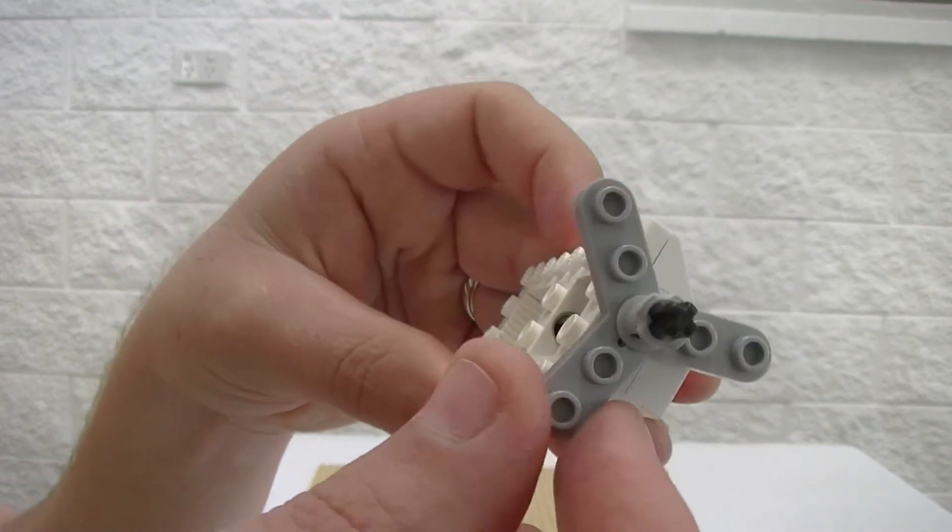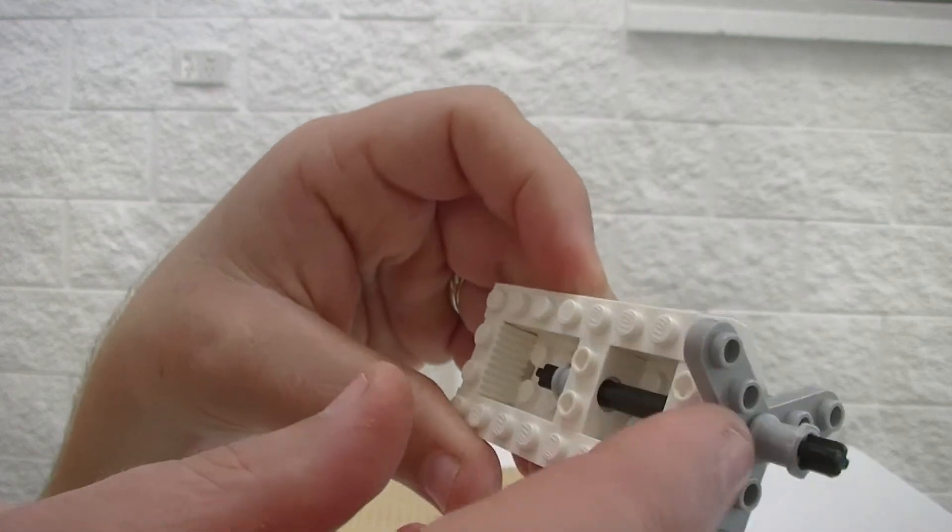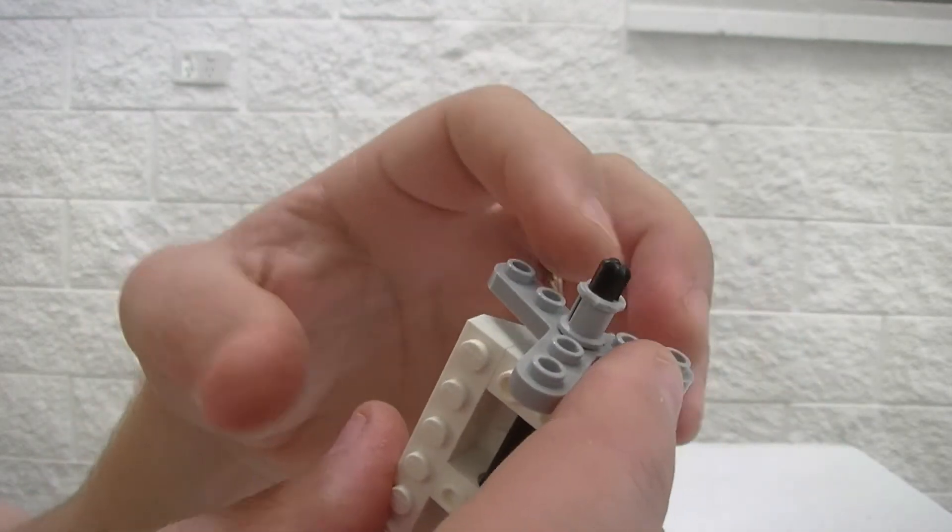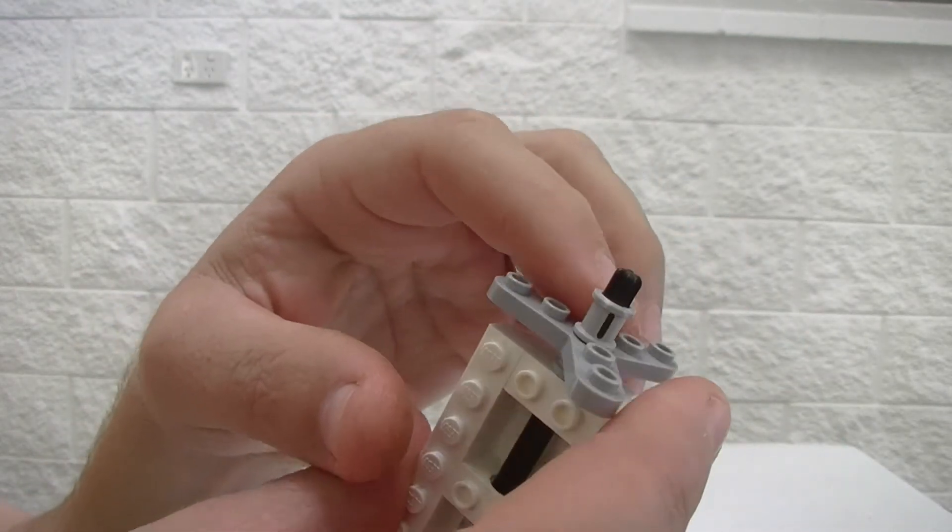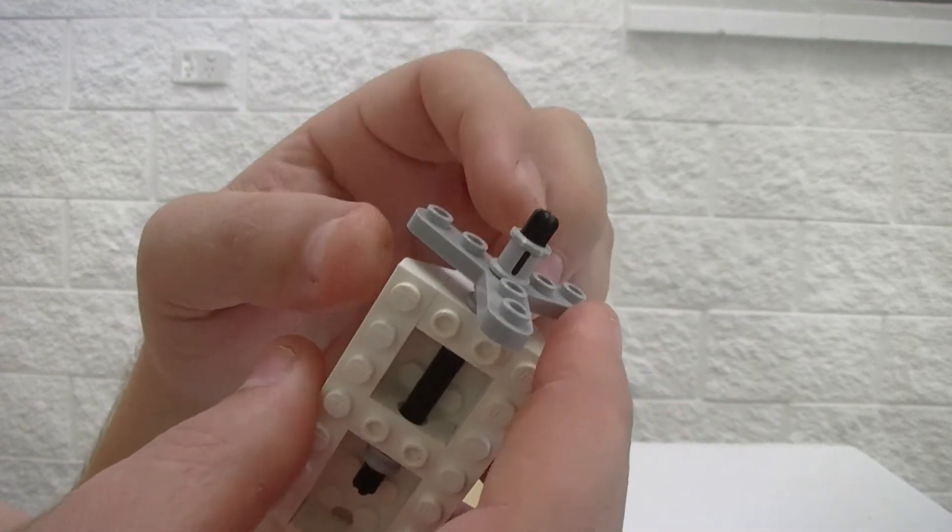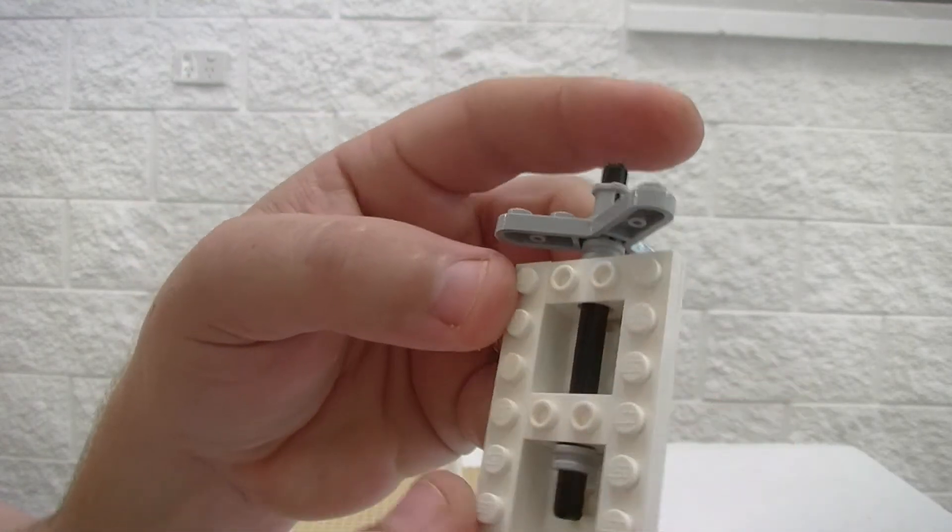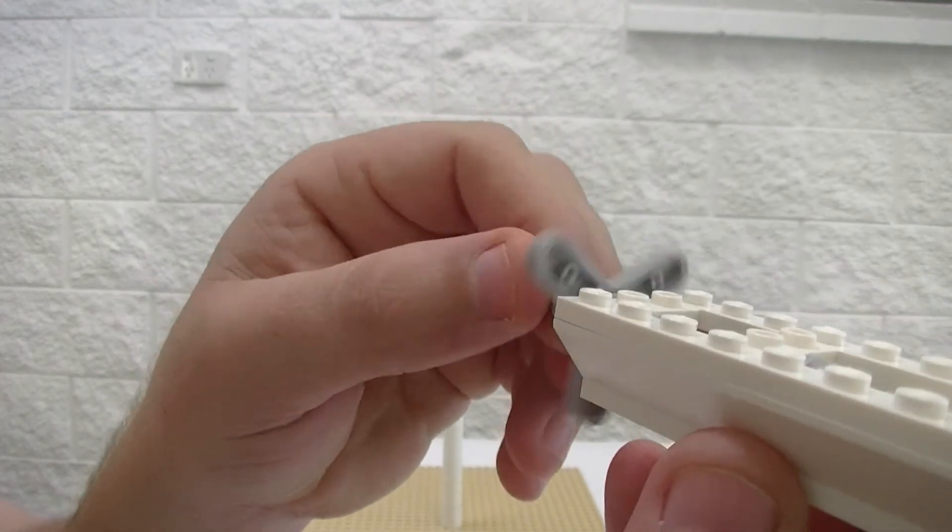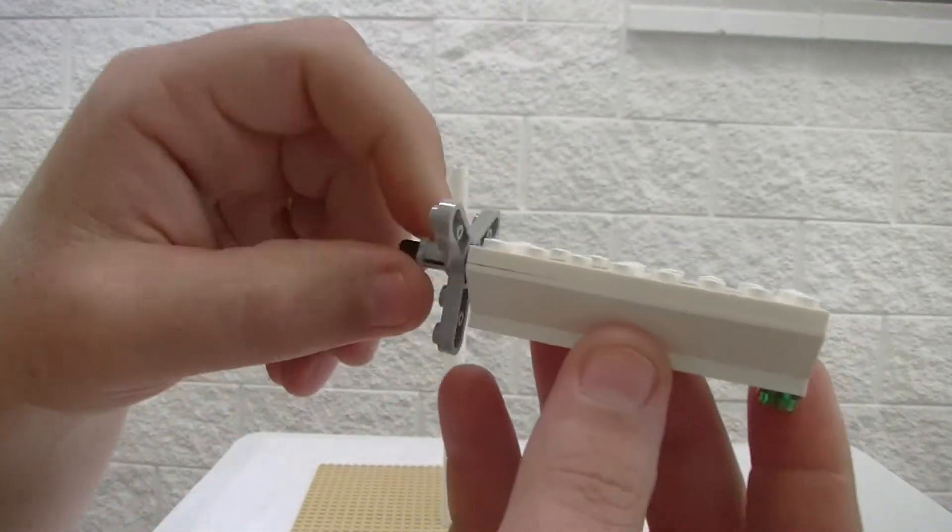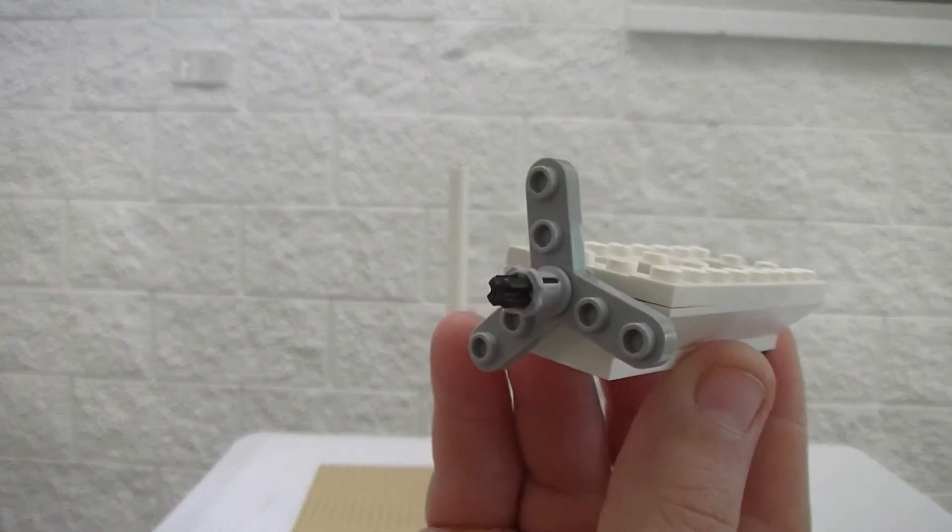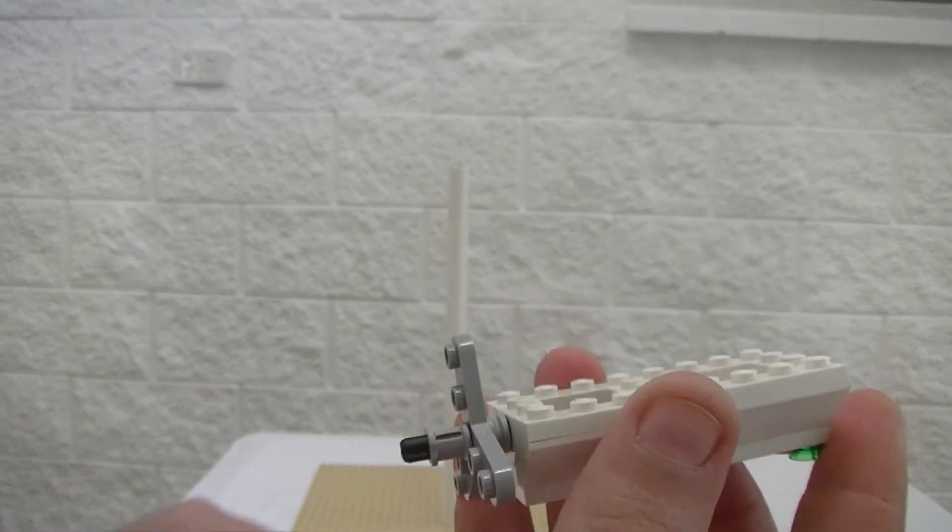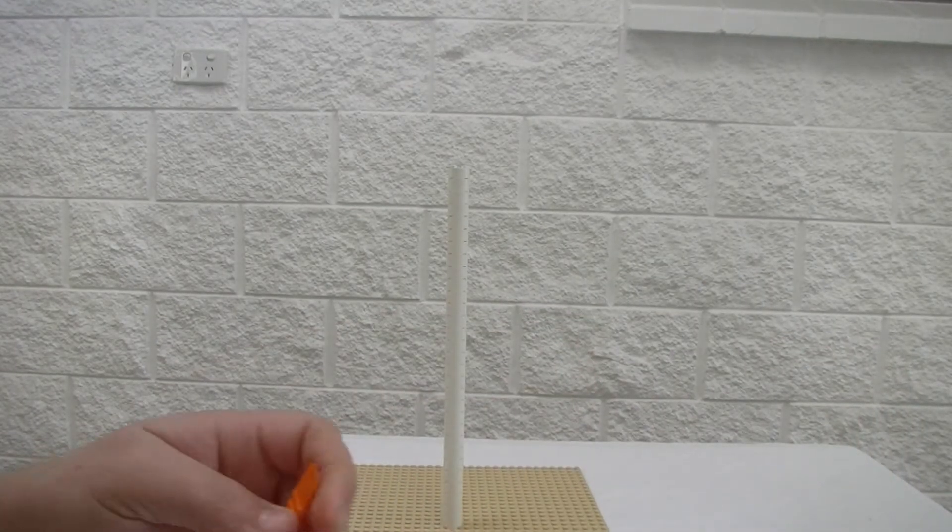Then it's just one of the other—not sure what you call these—sort of end cap pieces, little washer pieces. We have another one on there to hold it all in place, and it spins quite freely. Then the actual base of it